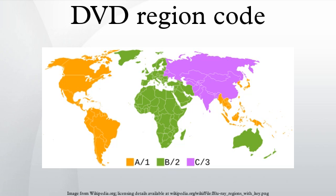The region coding of a DVD can be circumvented by making a copy that adds flags for all region codes, creating an all-region DVD. DVD backup software can do this, and some can also remove Macrovision, CSS, and disabled user operations. In common region-locked DVDs, the region code is stored in the file VIDEO_TS.IFO, byte offsets 34 and 35.